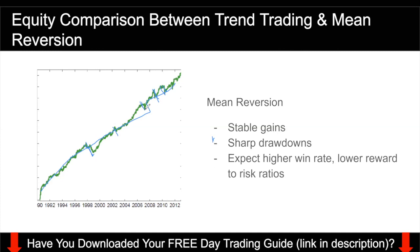You can expect a higher win rate with mean reversion — maybe 60% of the time, maybe even 70% if you are good. But the downside is that you will not have a high reward-to-risk ratio. Don't expect to put in a dollar and make three. You are just betting for price to go back to the mean, which gives rise to an equity curve that is very stable, but when there's a correction or drawdown, it's very sharp. You must be comfortable with that kind of sharp drawdown as part of this strategy. If you can accept it and it resonates with you, then you should go for this strategy.